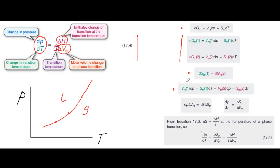Now we can say that Vm1 minus Vm2 is delta V, because this is the difference in the molar volume between the two phases. Similarly, Sm1 minus Sm2 is delta S, because it is the difference in the molar entropy between the two phases. So putting in delta V and delta S and doing some tidying up, we get dP delta Vm equals dT delta Sm. That rearranges to dP/dT equals delta Sm divided by delta Vm. Finally, we use the expression delta S equals delta H over T to substitute for delta S, and we get the Clausius-Clapeyron equation.